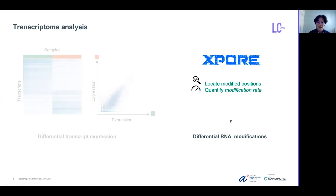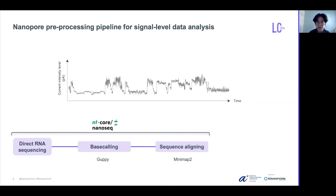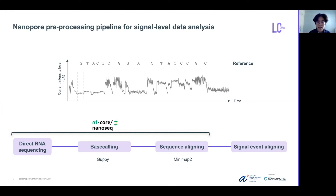Now let me show you how the method actually works. Beginning with sequencing RNA using Oxford Nanopore, we get a signal per read. Then we perform base calling and transcriptome alignment using Guppy and minimap2. Or we can use NFCore Nanoseq, the Nextflow pipeline, to run these steps. After we know which read is aligned to which transcript, an additional step is to segment the signal and assign it to the reference sequence. This can be done by Nanopolish event align. After we collect all the reads aligned in the same positions, we can then apply Xpore for all positions.